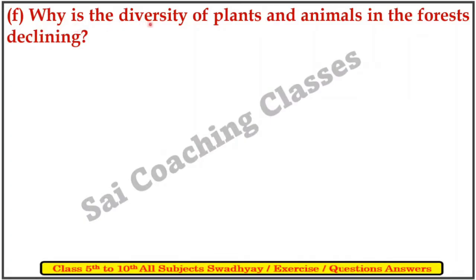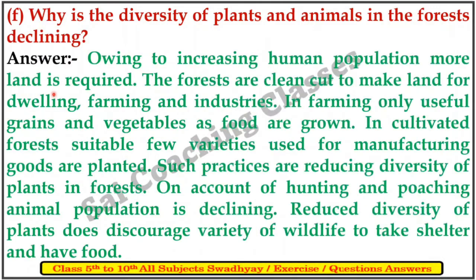F. Why is the diversity of plants and animals in the forest declining? Answer: Due to increasing human population, more land is required. Forests are cleared to make land for dwelling, farming and industries. In farming, only useful grains and vegetables are grown. In cultivated forests, only a few suitable varieties used for manufacturing goods are planted. Such practices are reducing diversity of plants in forests. On account of hunting and poaching, animal population is also declining.